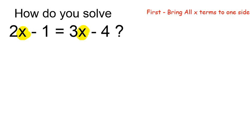In such cases, a useful first step is to bring all of the x's to one side. Now, I can either get rid of the 2x or the 3x.